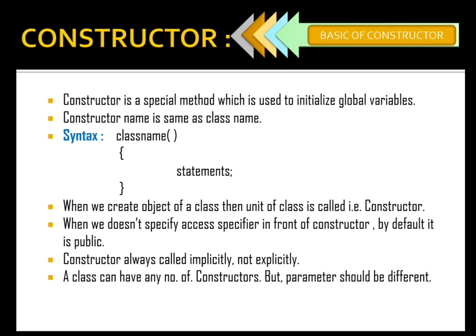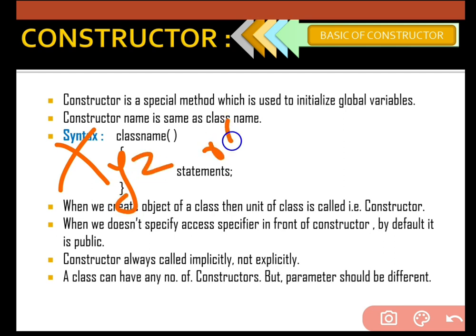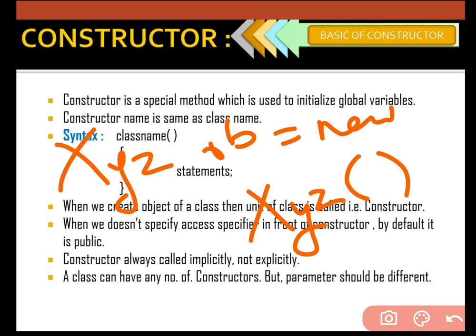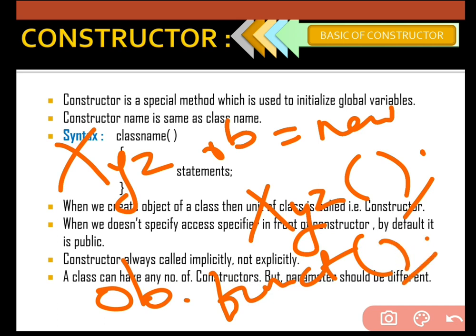If you want a demo: if I'm writing a class name that is XYZ, and object ob equals to new XYZ function bracket open close semicolon — from here the constructor is called. I'm not calling the constructor; it is called by default, it is called implicitly. But when I'm going to call a function, I write ob dot particular function name and then semicolon — that means I'm calling it explicitly.